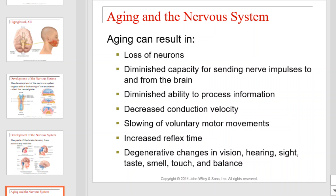Aging in the nervous system. Aging can result in the loss of neurons, diminished capacity for sending nerve impulses to and from the brain, diminished ability to process information, decreased conduction velocity, slowing of voluntary motor movements, increased reflex time, and degenerative changes in vision, hearing, sight, taste, smell, touch, and balance.